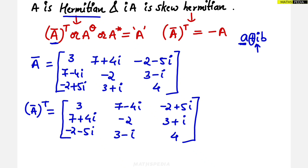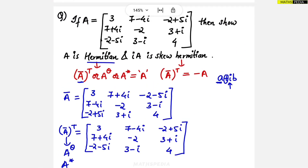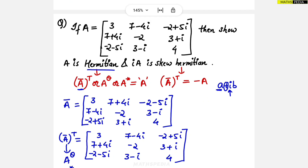This part is done. Now we have to show that A is Hermitian. The conjugate transpose, represented by A^θ or A*, should be equal to A. Carefully observing, this matrix is exactly equal to the original A matrix. So these two are exactly the same, confirming A is Hermitian.